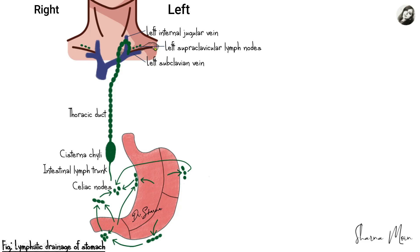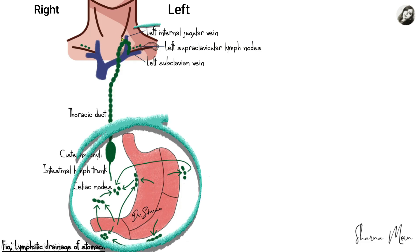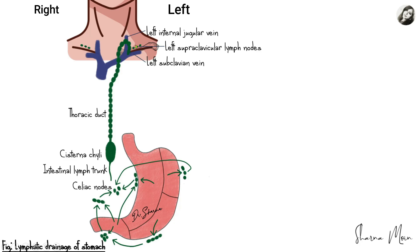It is important to remember that the thoracic duct drains on the left side of the neck. Above the clavicle in the neck we have a group of lymph nodes known as the supraclavicular lymph nodes — on the left side, these are the left supraclavicular lymph nodes. In case of gastric carcinoma, cancer cells from the stomach ultimately drain into the celiac nodes, then enter the intestinal lymph trunk, the cisterna chyli, and then the thoracic duct, which carries them to the left side of the neck, where the left supraclavicular lymph nodes are located. The cancer cells may disseminate into these nodes through the nearby lymphatic network.